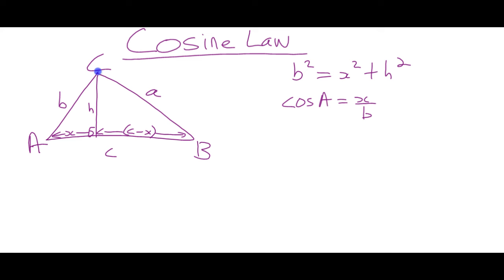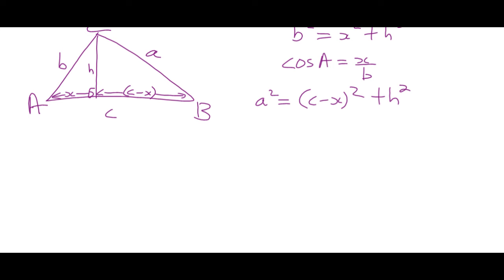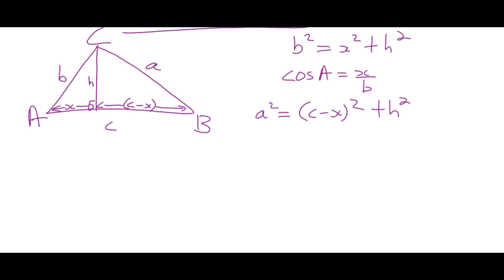If we look at the right-hand triangle, we can see that A squared is equal to C minus X squared plus H squared. If we expand C minus X — if we actually square that — we'll get four terms, which we'll collect into three, because two of them will be alike. So we get A squared is equal to C squared minus 2CX plus X squared plus H squared.